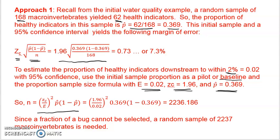...you get 1.96 over 0.02 squared times 0.369 times 1 minus 0.369, and that gives you a total of 2,236.186 macroinvertebrates.